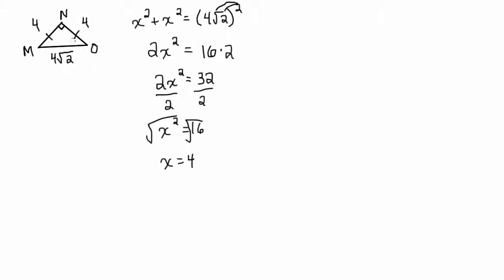You may have recognized it was a special right triangle. Because these two sides have the same measure, the two angles have the same measure. With 90 degrees taken by the right angle, you're left with 90 divided by 2 — so this is a 45-45-90 right triangle. The hypotenuse is always the leg times root 2. If the hypotenuse is 4 root 2, the legs are just 4. If you didn't recognize that and used the Pythagorean theorem, that's great — it works. But if you run out of time on tests, try to recognize the special right triangle.